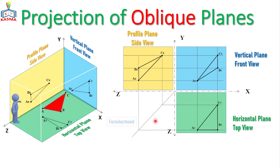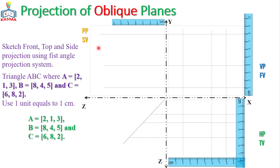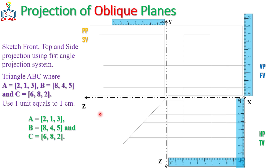Now, when working with numerical values — that is, when coordinate points are given as numbers — let's see how to place them on the first angle projection system in a multi-view drawing. The example is: sketch the front, top, and side projections using the first angle projection system for triangle ABC, where A is (2, 1, 3) cm, B is (8, 4, 5) cm, and C is (6, 8, 2) cm, given as X, Y, and Z coordinates.